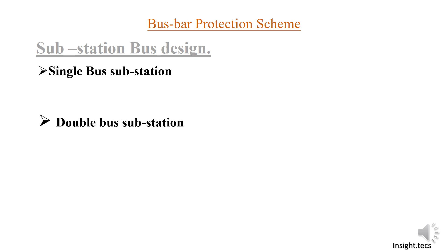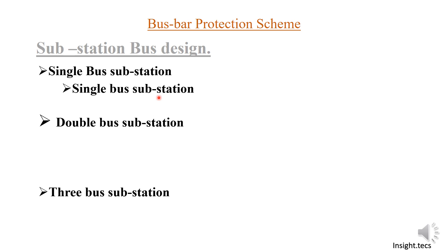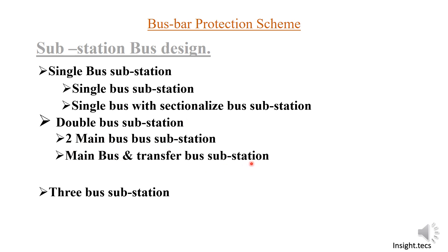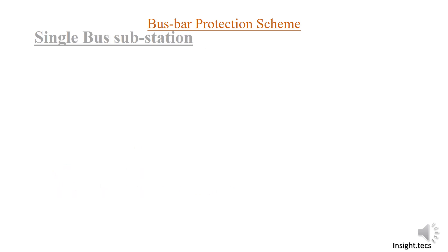Bus bar arrangements can be in the form of a single bus substation, double bus substation, or a three bus substation. In a single bus substation we have a single bus and also a single bus with a sectionalized bus. For a double bus substation there are two main bus configurations, or a main bus and transfer bus, or a main-cum-transfer bus substation. In the case of a three bus substation there is only one arrangement. In today's video we will learn about the single bus substation scheme.